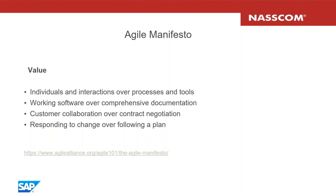Following these four values means we are following agile. During that meeting, 12 design principles were also laid out — giving highest priority to customer satisfaction through early and continuous deliverables, welcoming changing requirements, delivering working software frequently, and ensuring business people and developers work together. There's a hyperlink provided for all these principles. The crux is: if we are following these values and principles, then we are following agile.